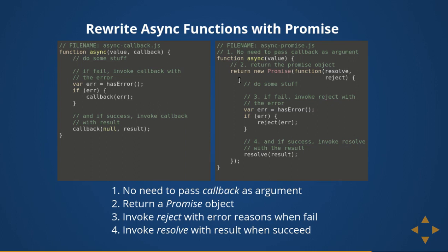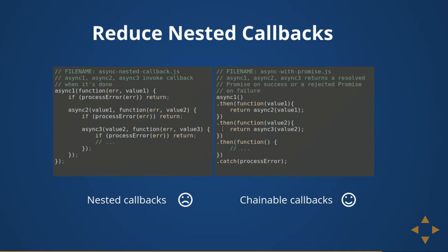No need to pass the callback as an argument or return it as a callback function. You simply create a new Promise object and return it, either in a resolved or rejected state. Invoke `resolve` with the result on success and `reject` with the error on failure. This makes a lot of things easier. Instead of nested callbacks, you should move to chainable callbacks using promises.